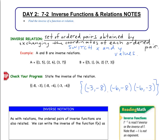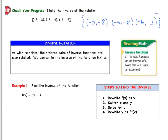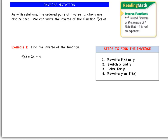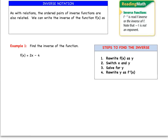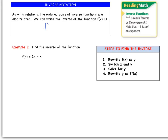Now we're going to get into inverse functions and find an inverse function. As with relations, the ordered pairs of inverse functions are also related, but this time we have a special notation: f inverse of x, written as f⁻¹(x). It's not a power — it's simply read 'f inverse of x' or 'the inverse of f.'